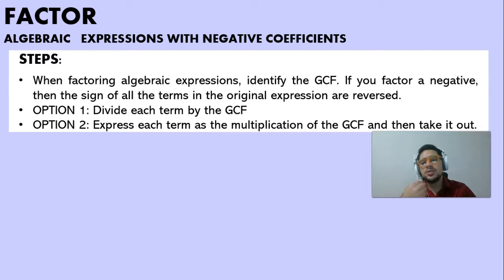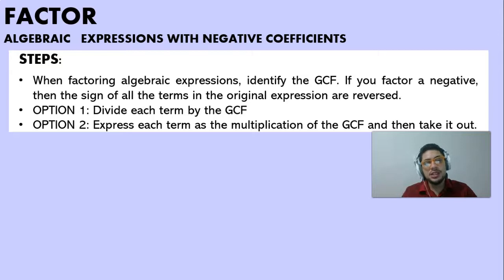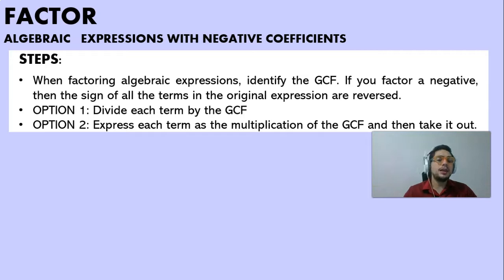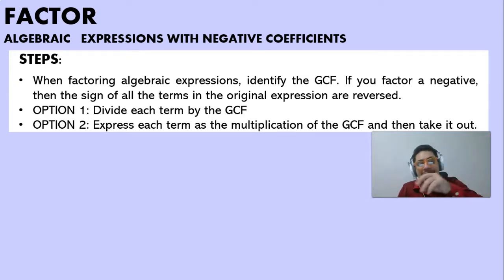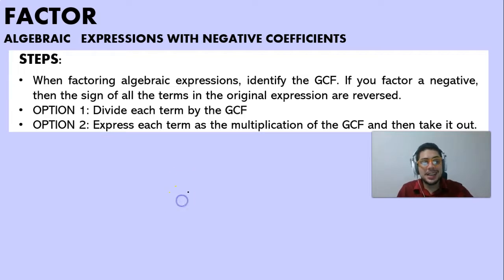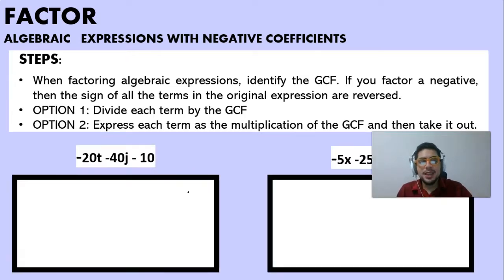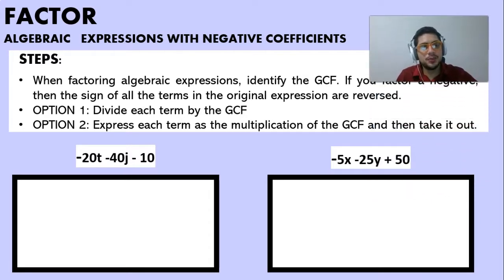The first option is how to divide each term by the greatest common factor and express the GCF that way. The other way is by expressing it as a multiplication and then taking it out. Let's get to it — these are the two exercises we are going to be doing today. Feel free to pause the video and try them on your own.